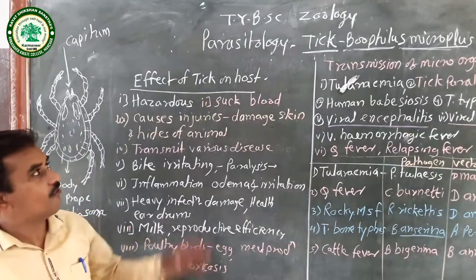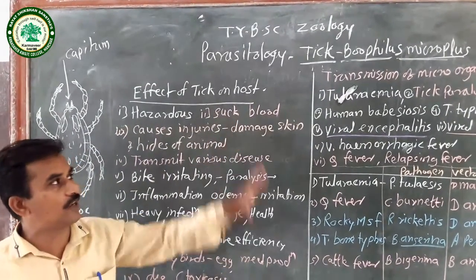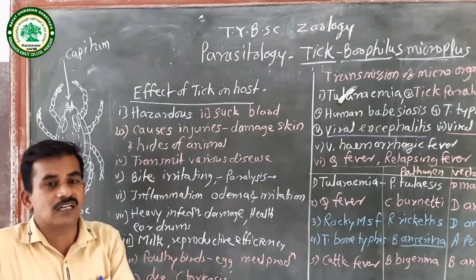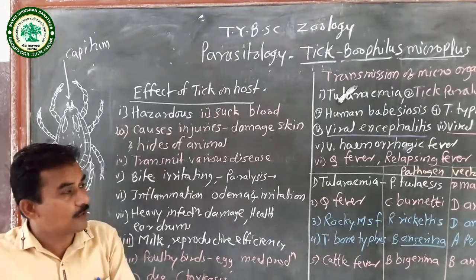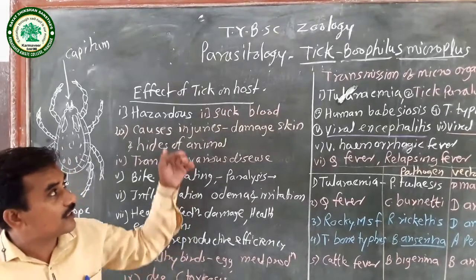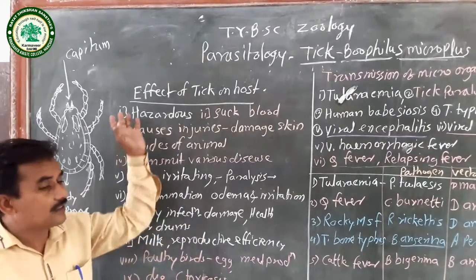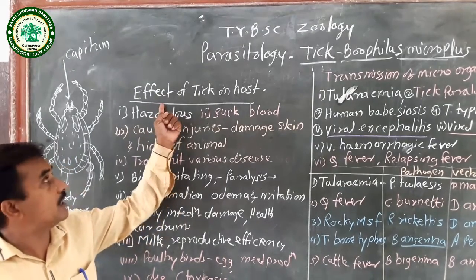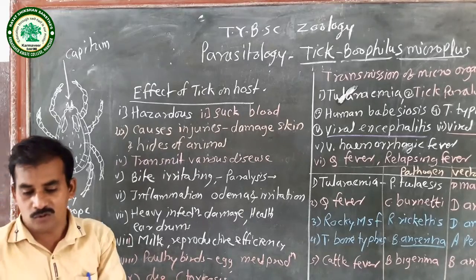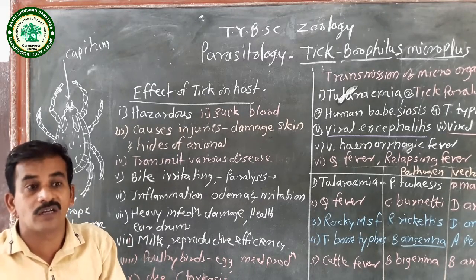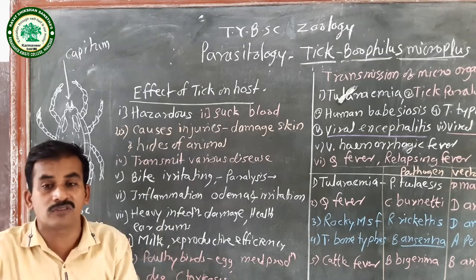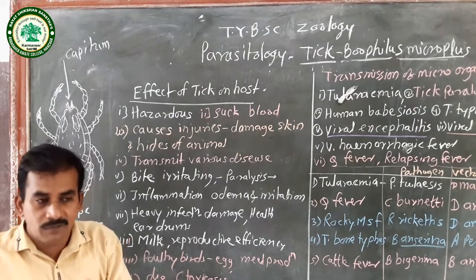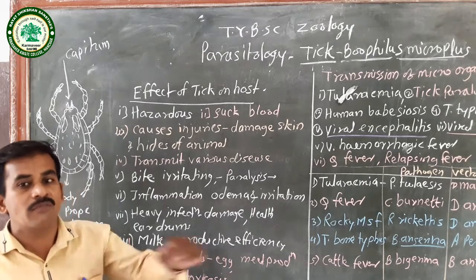In the last lecture, we studied the biologically known tick Boophilus microplus. We studied its different parts, its occurrence in wild and domesticated animals. The next point is the effect of the tick on the host body. This tick is a very important ectoparasite and blood-sucking animal that continuously sucks the blood of domesticated animals — cows, cattle, dogs, mild animals, reptiles, and mammals.